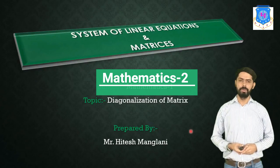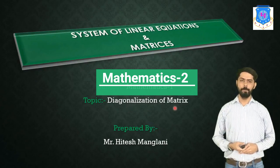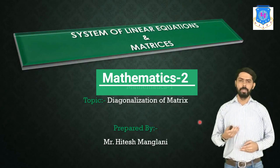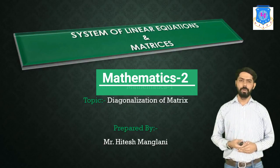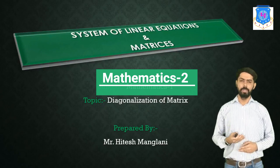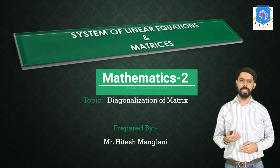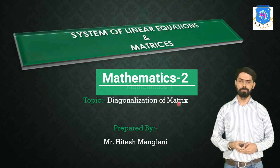First, we will understand what a Diagonal Matrix is. If all the values are zero except on the principal diagonal, and the principal diagonal has at least one non-zero value, then we say that matrix is in diagonal form.